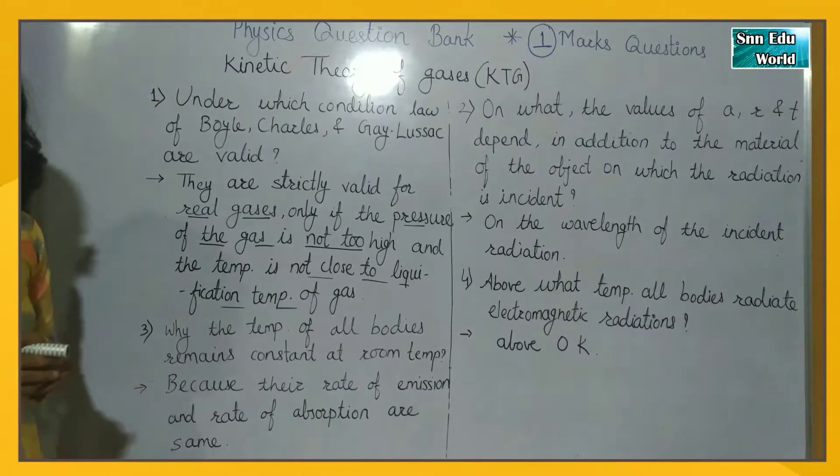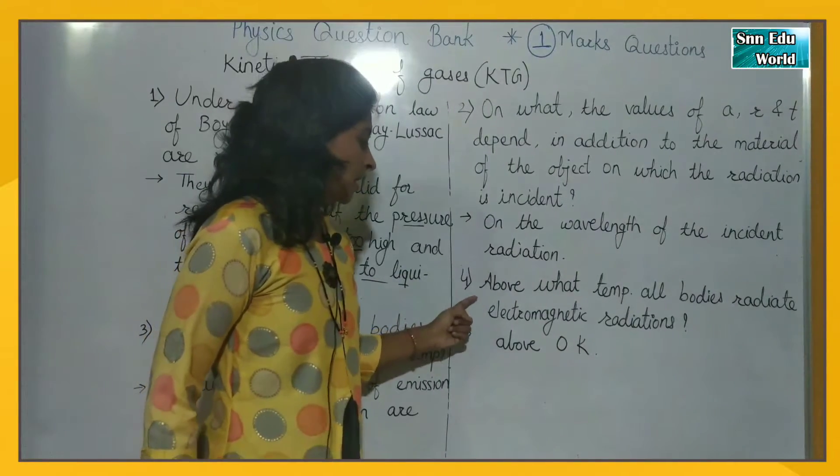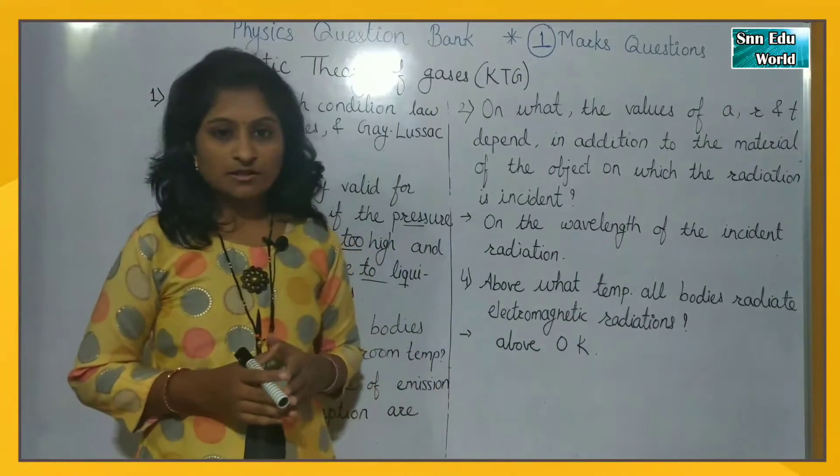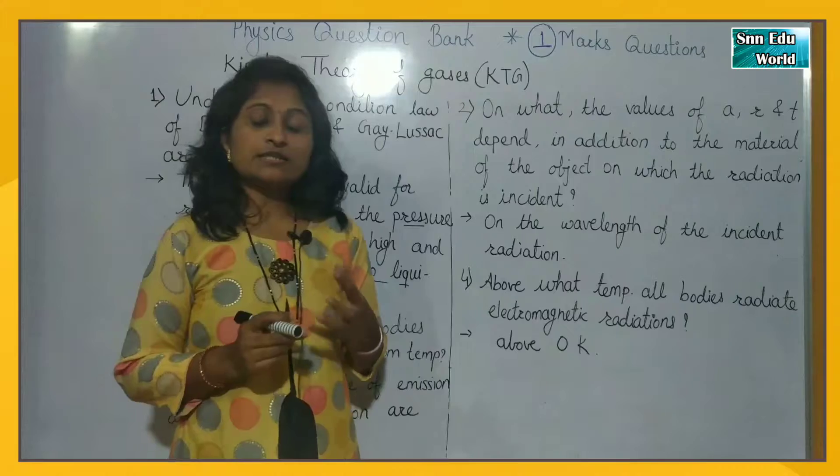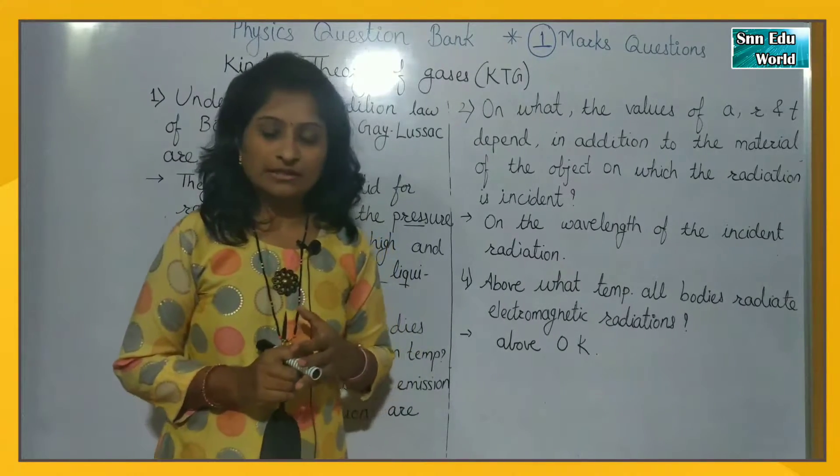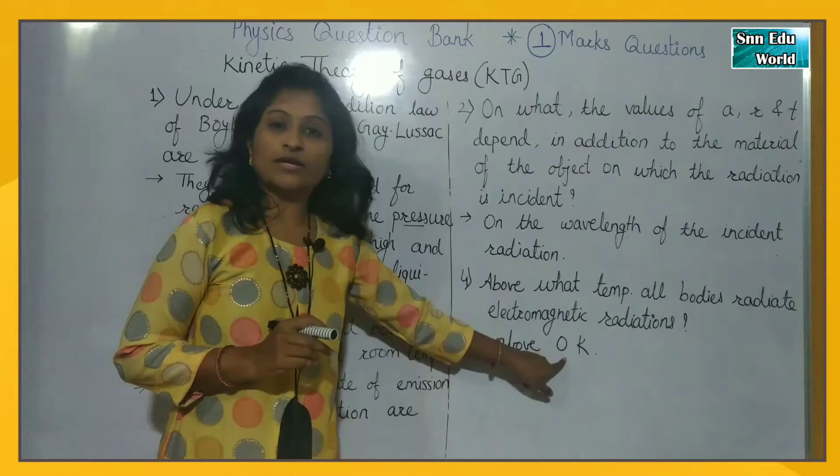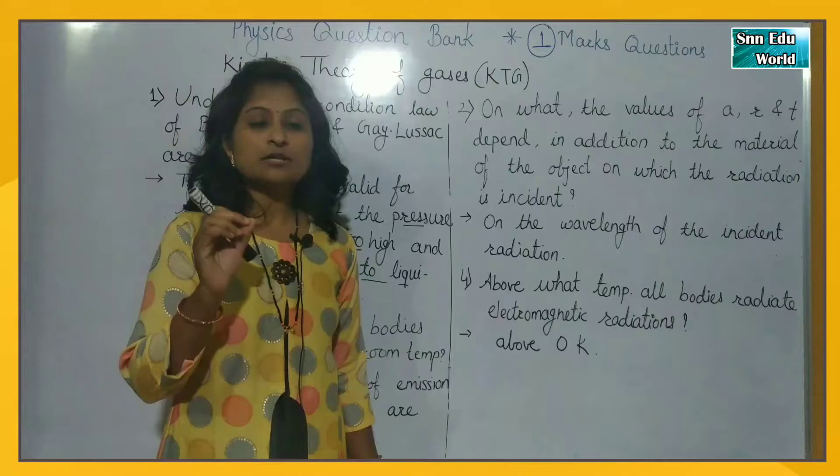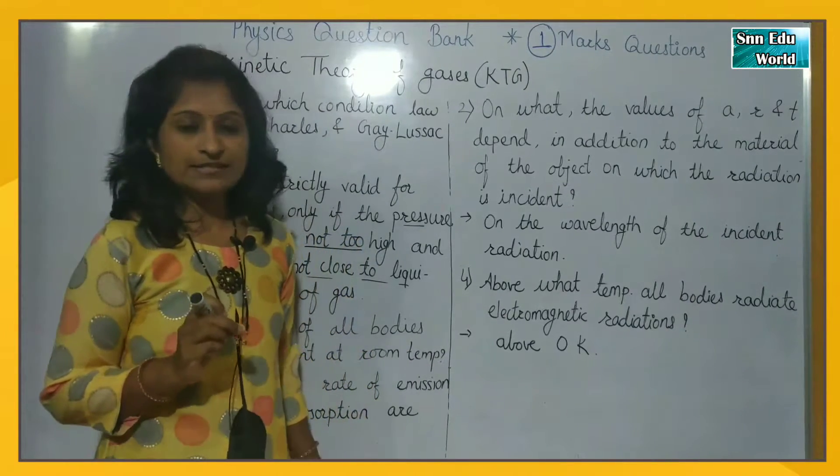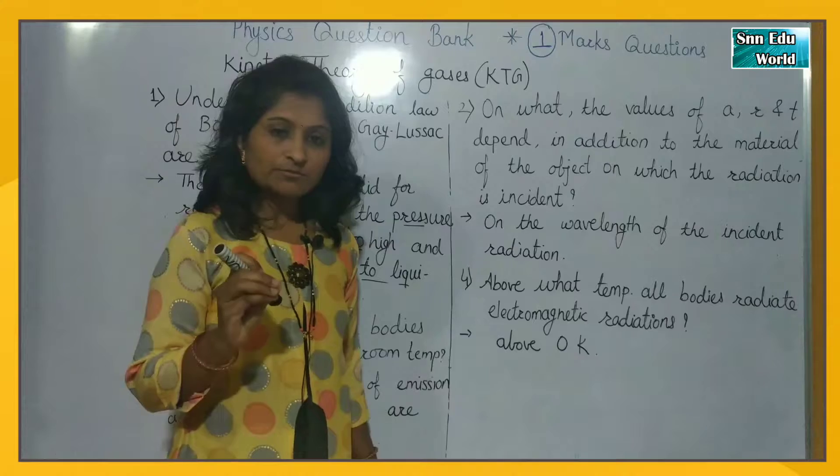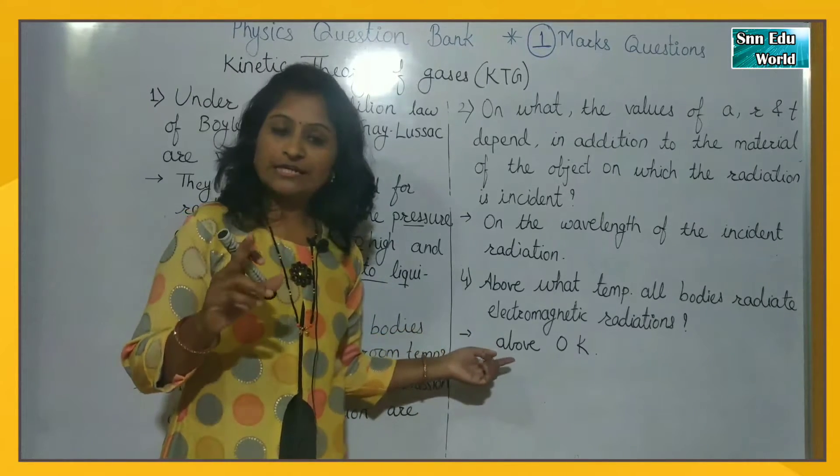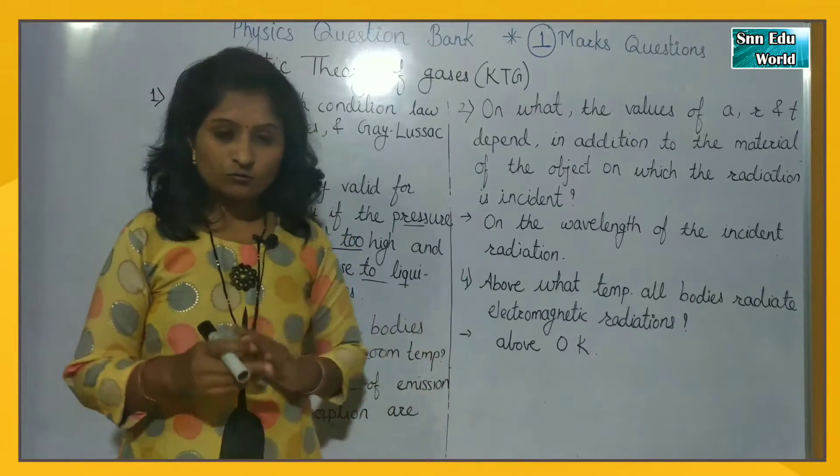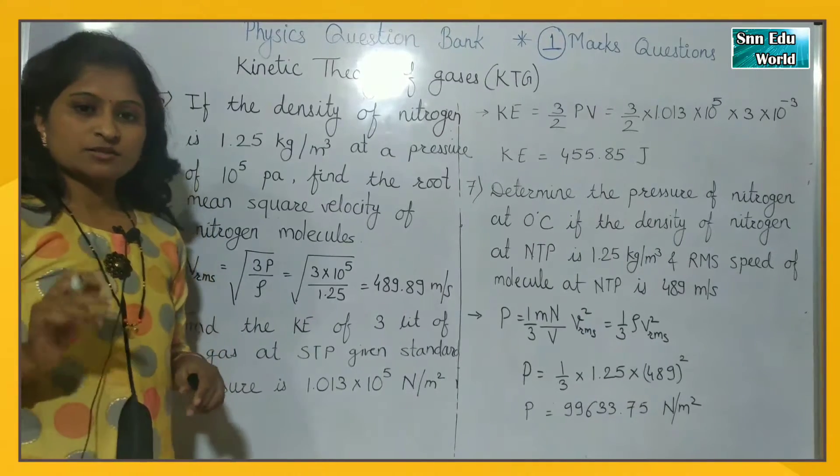So this is your third question. Now see the fourth. Above what temperature all bodies radiate electromagnetic radiations? So what is that temperature above which we will get the EM radiations, electromagnetic radiations? So that is 0 Kelvin. Above 0 Kelvin, that means what? 0 Kelvin means minus 273.15 degree Celsius. Above this temperature, everybody will radiate the electromagnetic radiations. So these are your four questions. So we will move for the next.